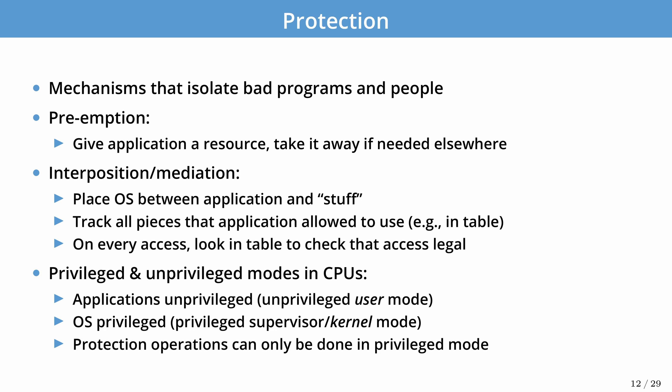The third protection mechanism is separation of privilege — we depend on the hardware and processor to separate the OS from the application. There are two privilege modes on the processor: unprivileged user mode where the application runs, and supervisor or kernel mode where the OS has access to all privileged resources, special instructions, all hardware devices, and device I/O. All protection can be done in privileged mode.